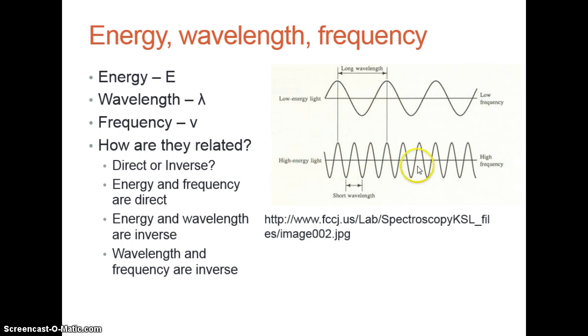This would be considered a low-energy light, and this is high-energy light. Frequency is how many of these cycles go per second, and since they're traveling at the same speed, the bottom one, more cycles would pass in a given second, so this bottom one is high-frequency and high-energy.